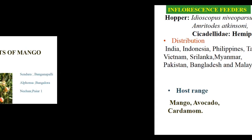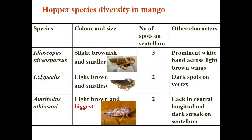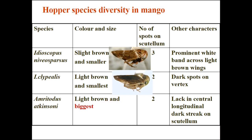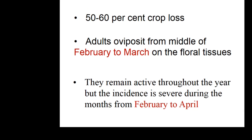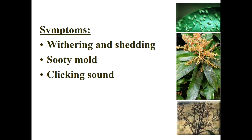Differentiation of hopper species: Idioscopus niveosparsus is light brownish and smallest; Idioscopus clypealis is light brown and medium-sized; Amritodus atkinsoni is the biggest in size. Number of spots on the scutellum: 3 in Idioscopus niveosparsus and 2 in both Idioscopus clypealis and Amritodus atkinsoni. Other distinguishing characters are shown in the slide. Hopper infestation can cause 50–60% crop loss.